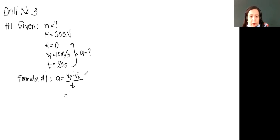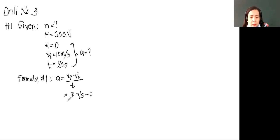So what is the final velocity? 10 meters per second. Initial velocity started at rest, so zero. Divided by 20 seconds. So we settle 10 minus zero — the answer is 10 meters per second divided by 20.